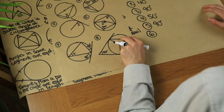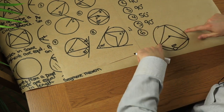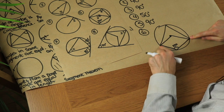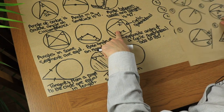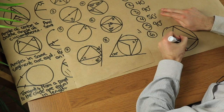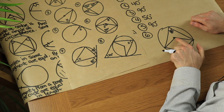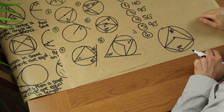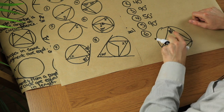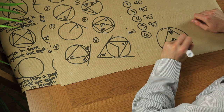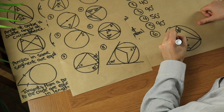For question six we need to find two angles. This is a cyclic quadrilateral because all four points lie on the circumference. Opposite angles add to 180, so if one angle is 100, the opposite angle is 80. The inner shape is not a cyclic quadrilateral because one vertex is the centre, not on the circumference. Using the angle at the centre is double the angle at the circumference: if the circumference angle is 80, the centre angle is 160. So x equals 80 and y equals 160.